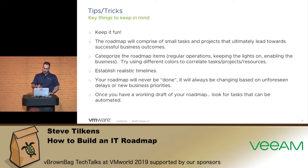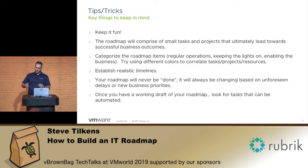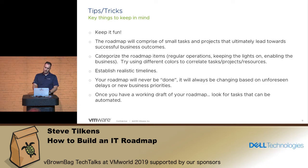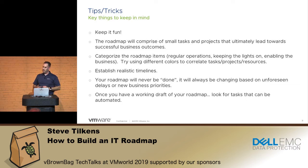Once you have a working draft of your roadmap, look for things that you can automate or improve through general process improvements. If your roadmap has three months allocated to do firmware upgrades on 12 hosts, that's a red flag — why is it taking three months? Look for opportunities; they're going to be visual and you'll be able to identify them faster. Maybe there are tools or processes you can put in place to improve things.